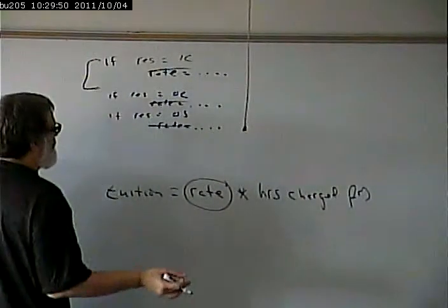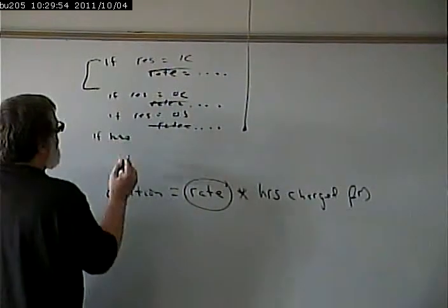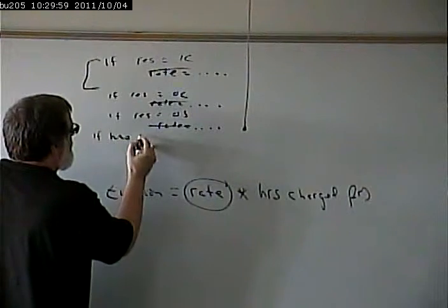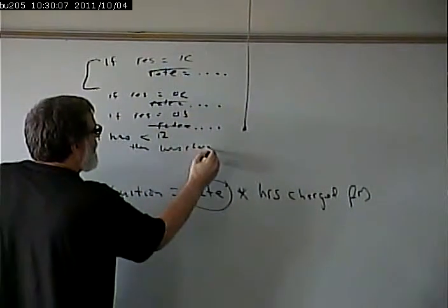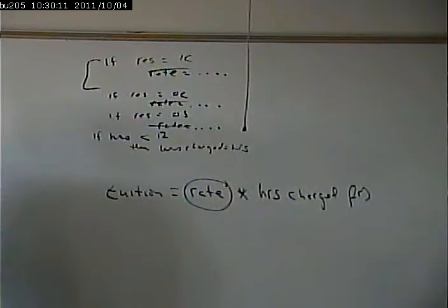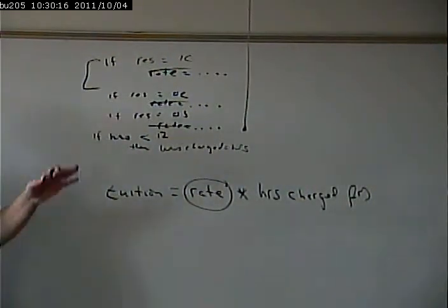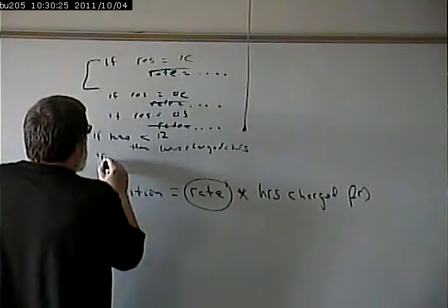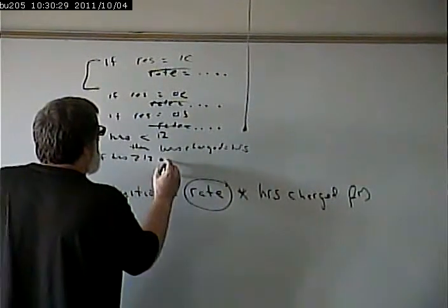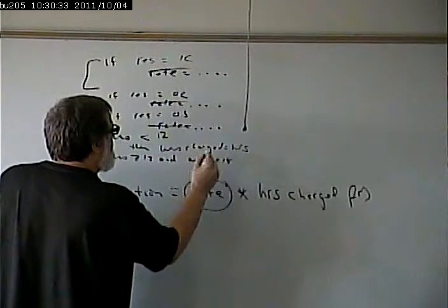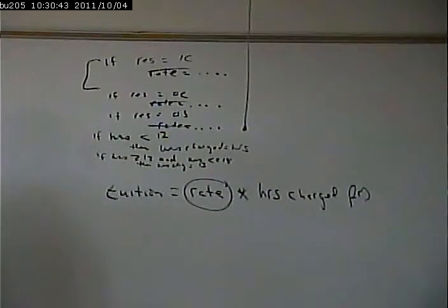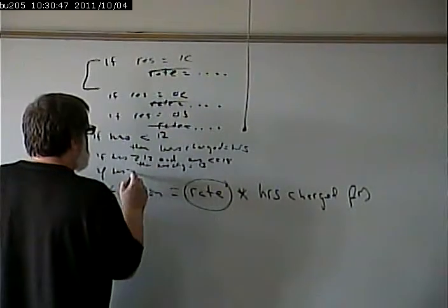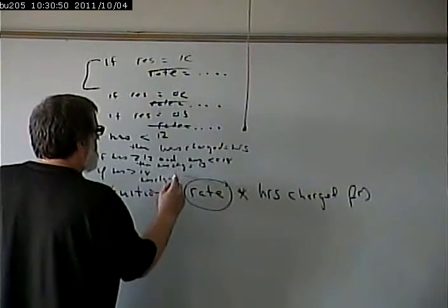Now, we could have an if statement that says if residency equals in county, or we could actually have a series of if statements. If residency equals out of county, if residency equals out of state. And in all these cases, we set the rate equal to something. That's all we have to do. Set the rate to something. We can have a similar set of if statements for the hours. If hours are less than 12, then hours charged equals hours.